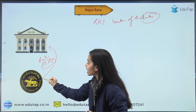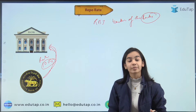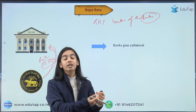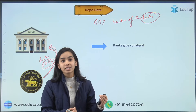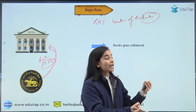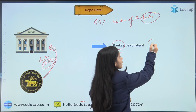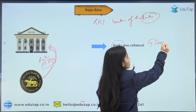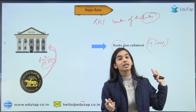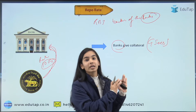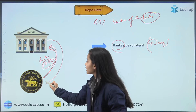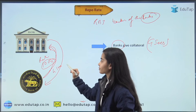The repo rate is the rate at which the RBI gives loans to the banks. Just as banks take collateral like a house or land, the RBI also takes collateral from banks to give loans. The collateral taken from the banks is government securities — government bonds and treasury bills — which are trusted by the RBI.